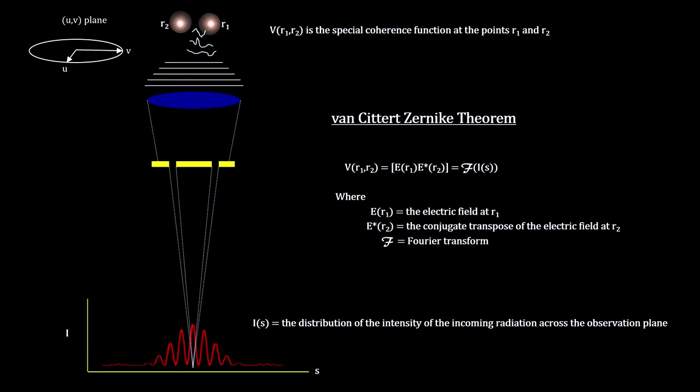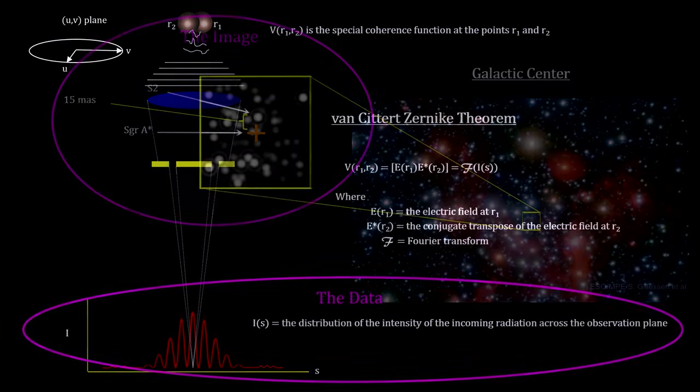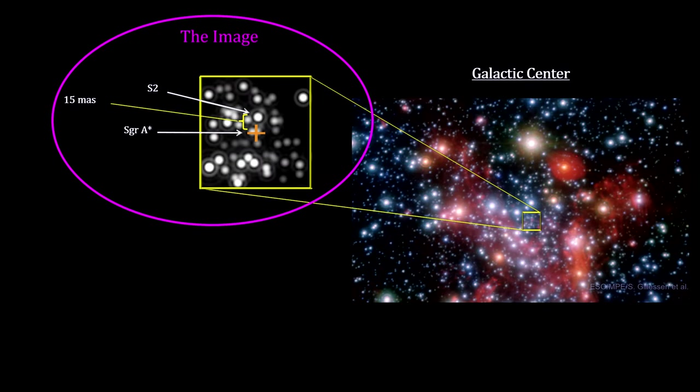It is always a challenge to figure out what was actually happening at the source of the collected data. For example, the ESO-VLT interferometer team reconstructed the motion of S2 around SAG A star in the UV plane 26,000 light-years away, by applying interferometry techniques to images captured by the telescope in the observation plane here on Earth.